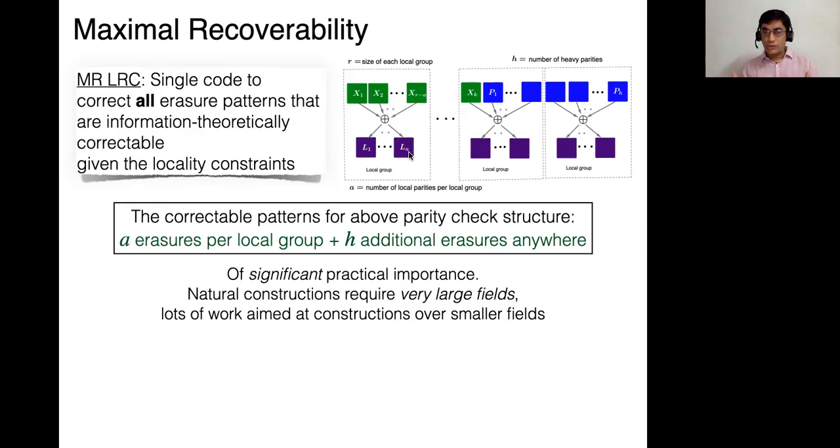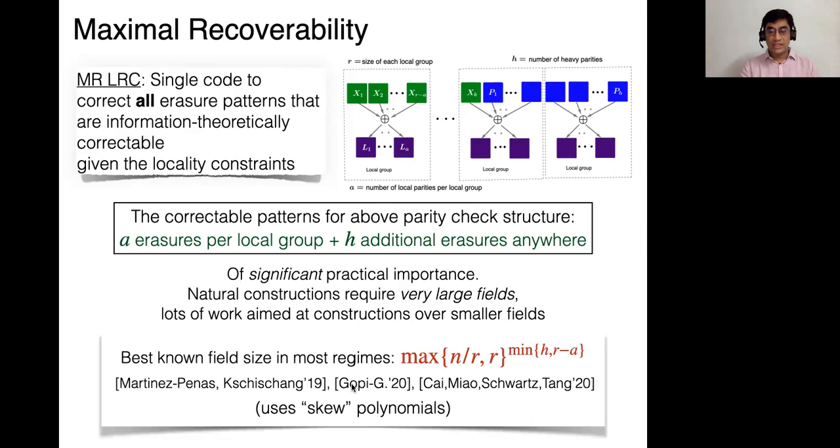And clearly these are of significant practical importance because they really allow you to correct as many failures as possible, all patterns which are consistent with your locality. Unfortunately the most natural constructions one can think of require very large fields. And there has been a lot of work using many different techniques aimed at constructing these over small alphabets or fields. And so a very recent work which we did with Gopi and others, also building on previous work by Martinus Penas and others and independently done by Cai et al, essentially gives the best known field size in many possible regimes. There are lots of parameters here, N, R, A, and all that. So depending on each choice, one construction or the other is better, but this one is more or less the dominant one in many settings. I won't go through the bound here, but it's just some bound which is optimized. And the thing I want to point out is that this uses something called skew polynomials, a very intriguing non-commutative analog of polynomials.